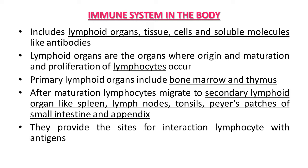The primary lymphoid organs in our body are of two types: bone marrow, which is present in our large bones, and the thymus, a type of gland present in our body. After maturation, the lymphocytes involved with the immune system migrate to secondary lymphoid organs.